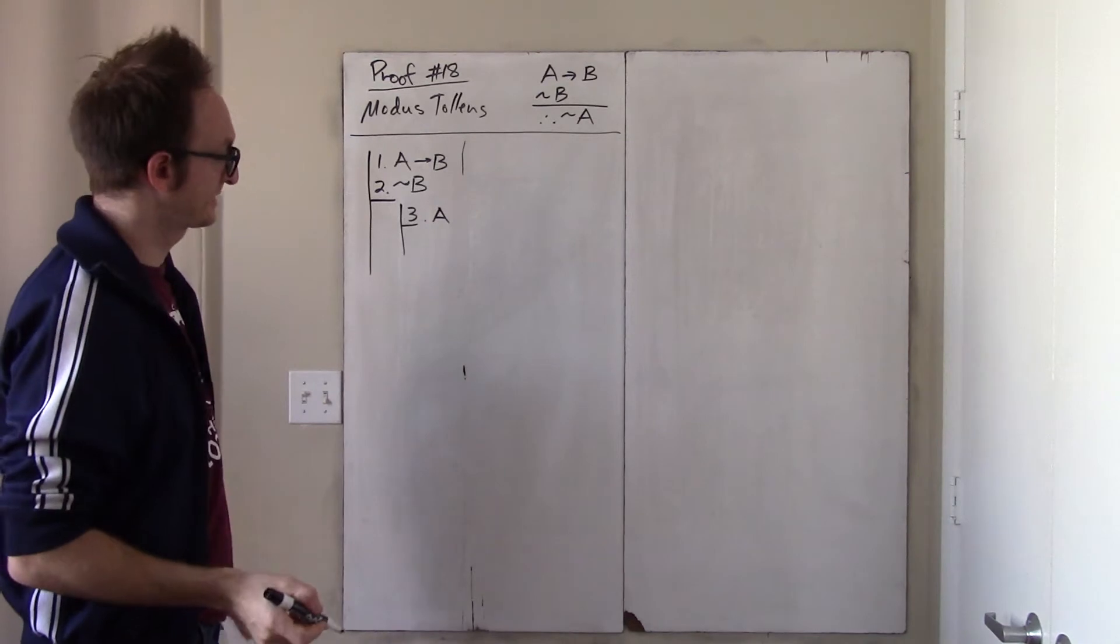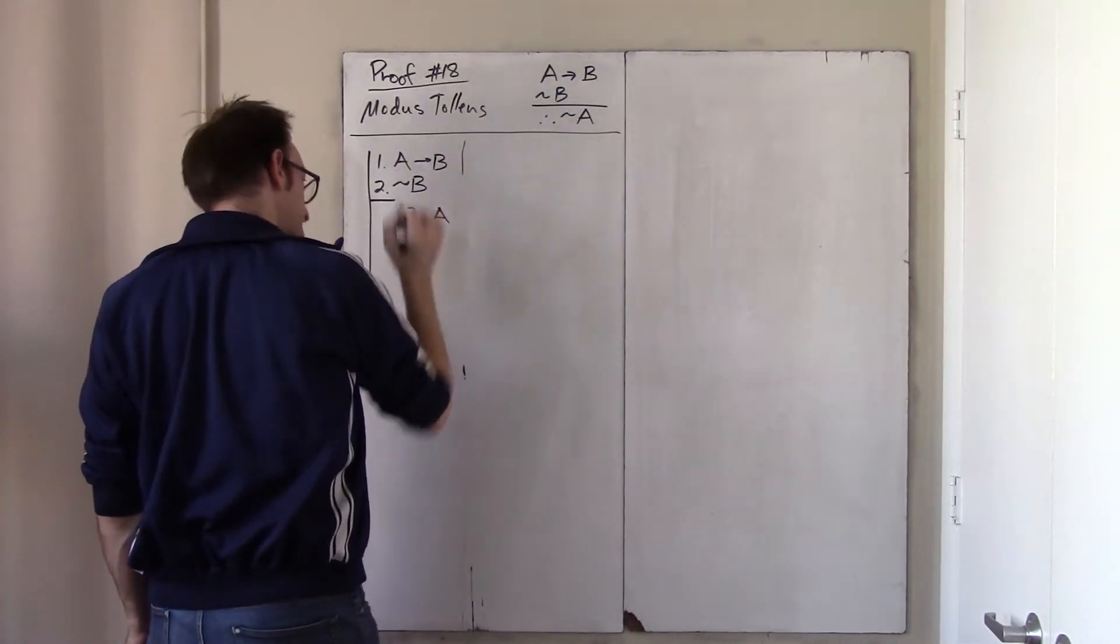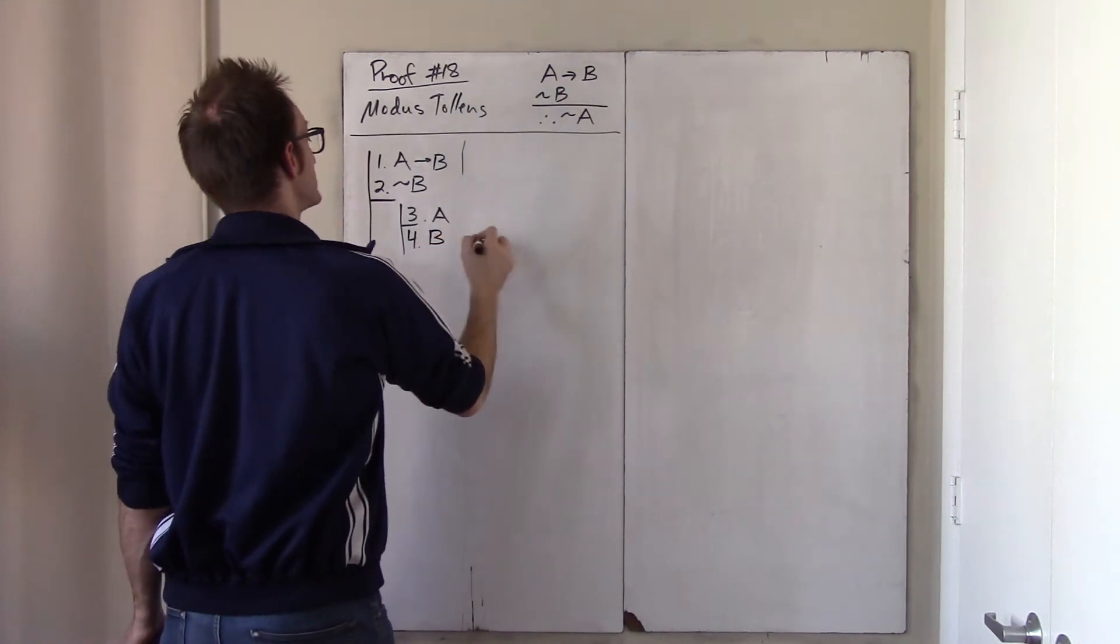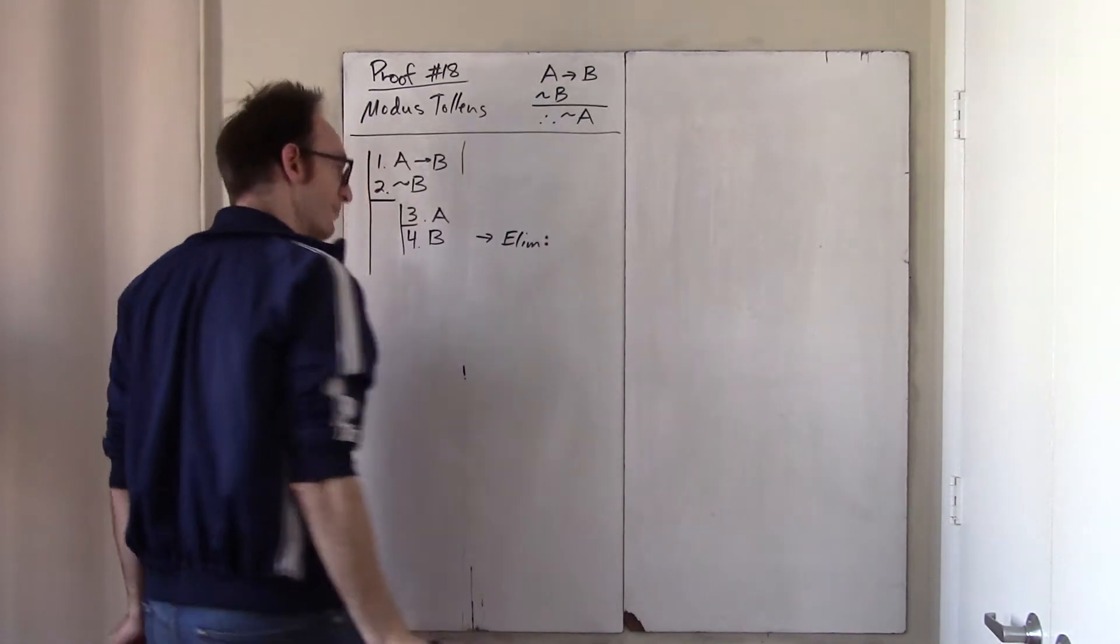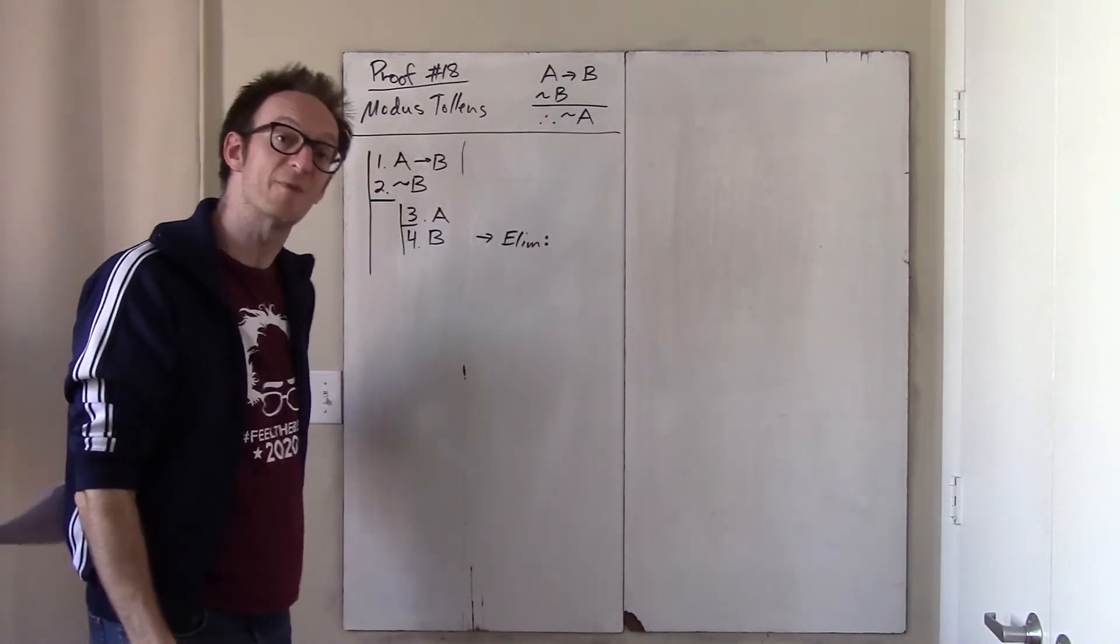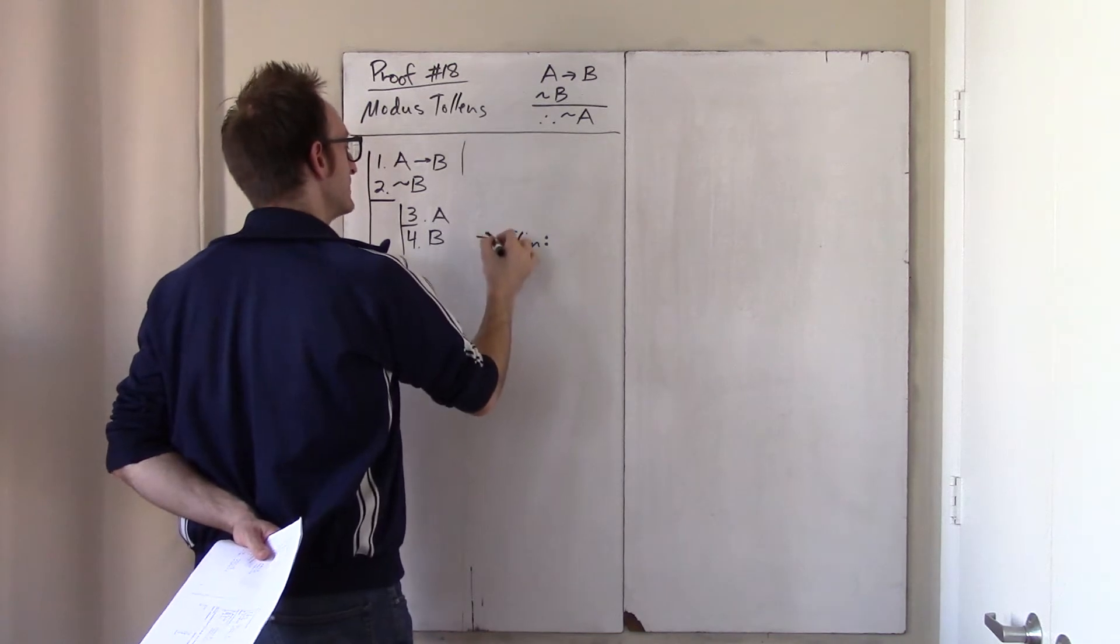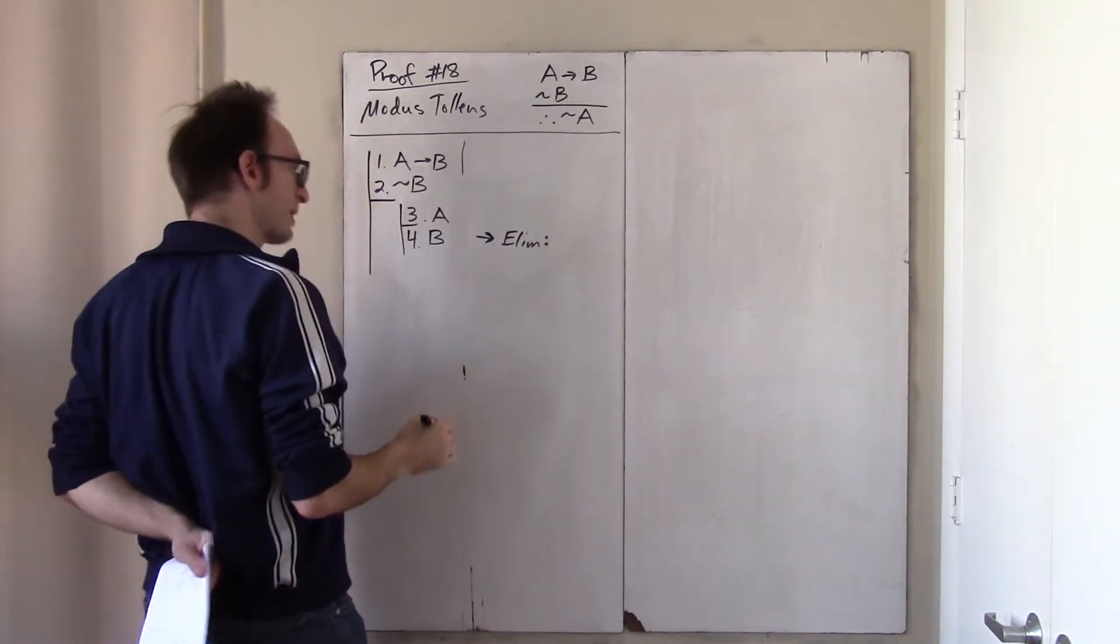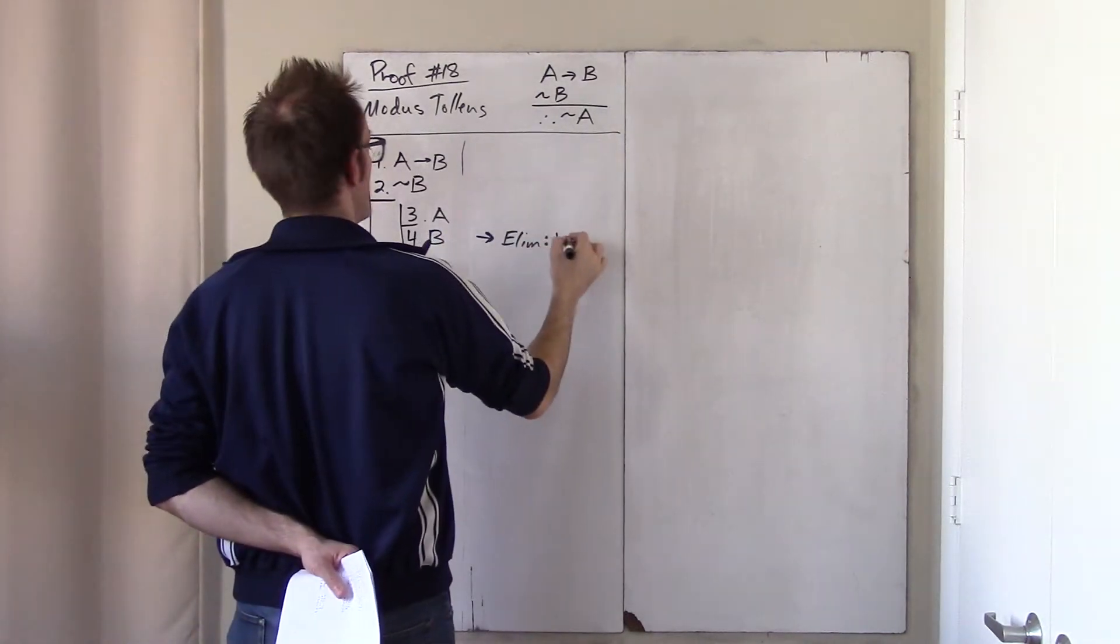And okay, I guess this contradiction comes more or less immediately, because A, together with if A then B, yields B. This rule is called arrow elimination, which is really just the name for modus ponens, which we do think of as kind of a basic rule. It's the basic rule governing the conditional.